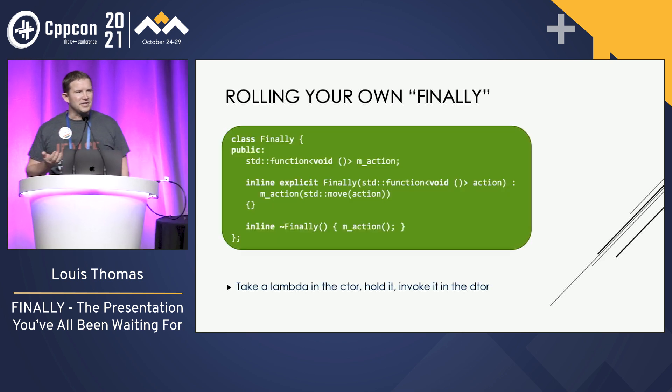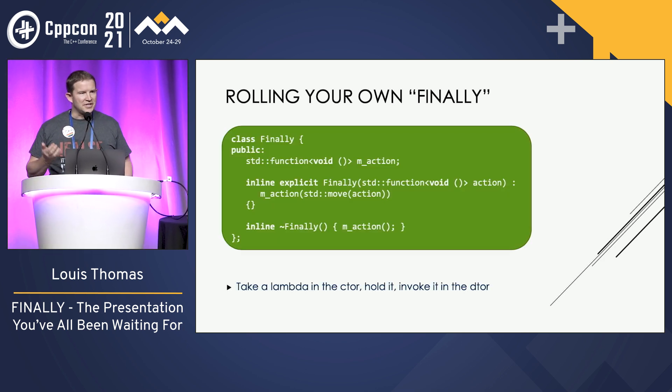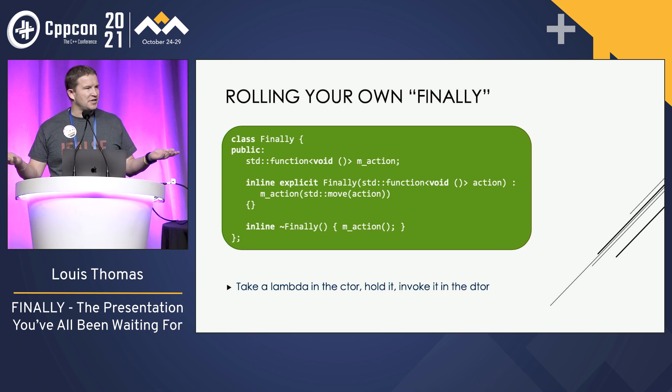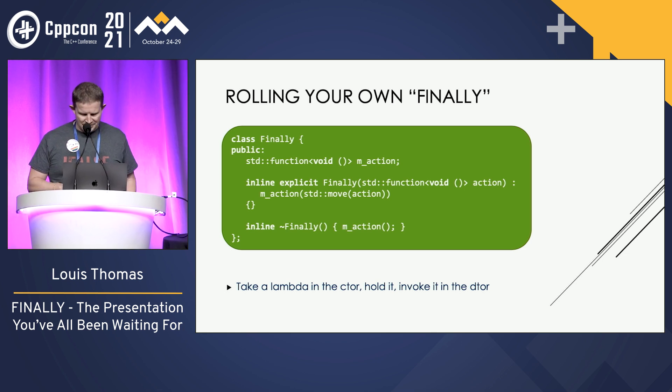It's pretty simple, right? We take a lambda in the constructor, we hold on to it, and we invoke it in the destructor. Pretty straightforward.